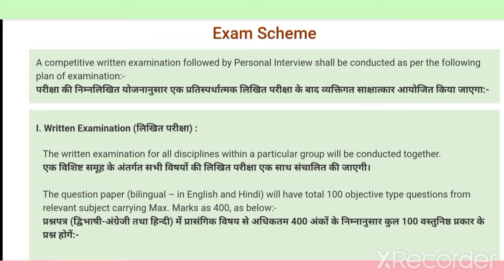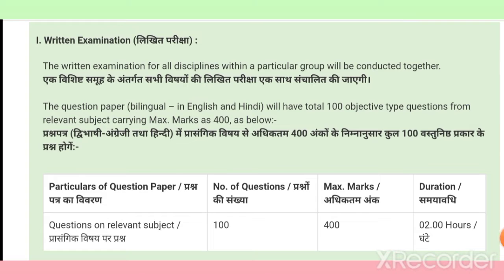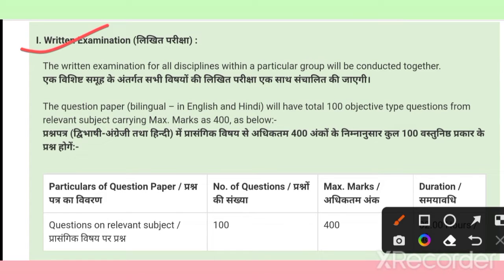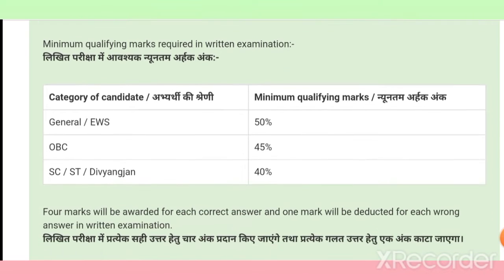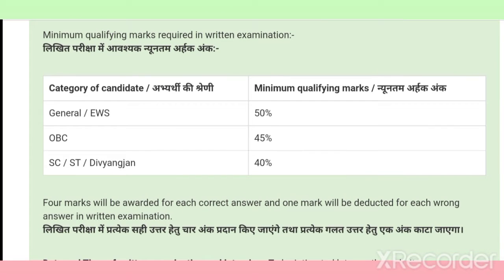There will be a competitive written examination followed by a personal interview, conducted as per the following plan of examination. The written examination will be bilingual — Hindi and English — with a total of 100 objective-type questions carrying a maximum of 400 marks. You must also keep in mind that there will be a minimum cutoff: 50% for General and EWS, 45% for OBC, and 40% for SC/ST and PwD categories.